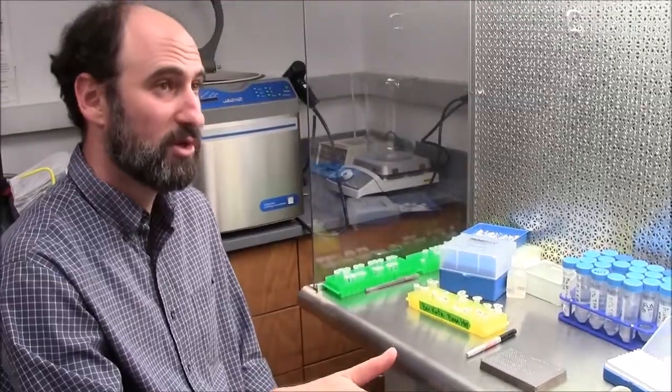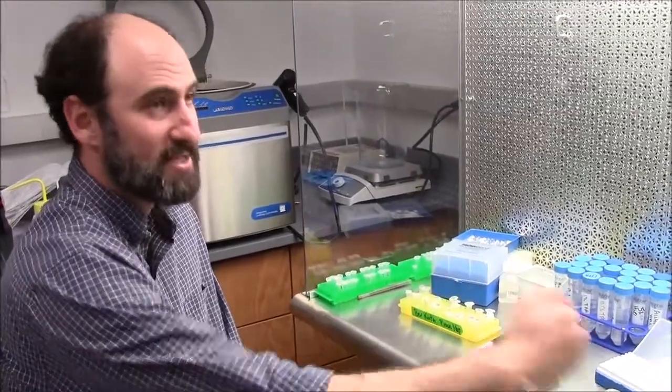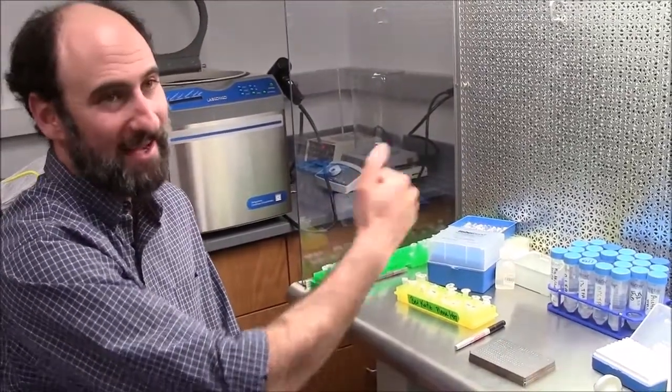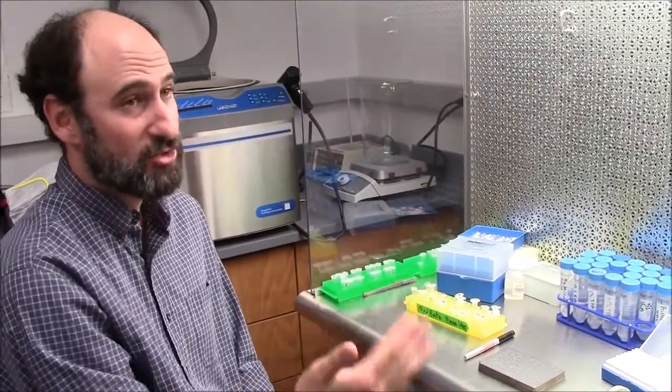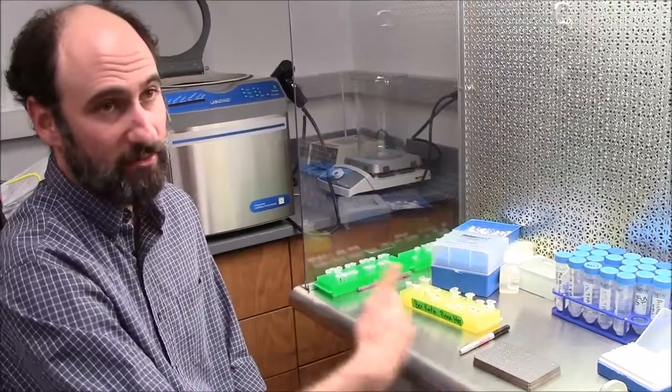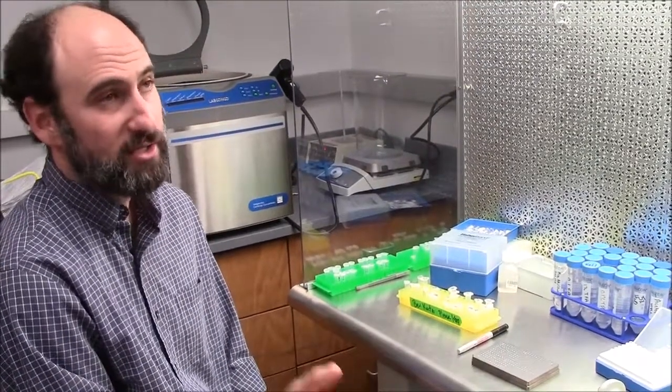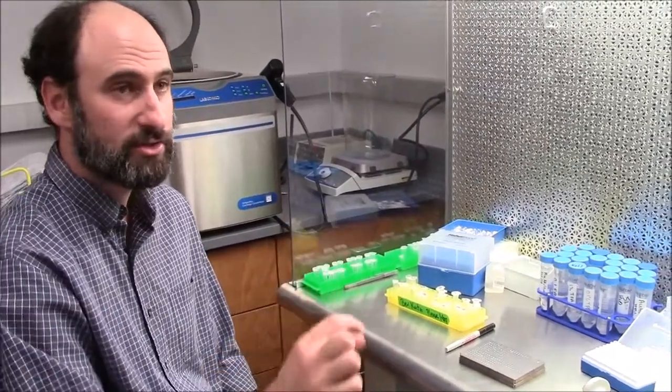And then the other thing is differential drying. Let's say you had like 10 samples in a row you wanted to spot. Don't spot all 10 spots of matrix and then go back and add your sample to it. They'll be dry, because there's 50% acetonitrile in the matrix. And they'll be not just dry, but preferentially dry differently, right? So you don't want differential drying, because the drying and how the matrix crystallizes with your sample in it, it changes the results.